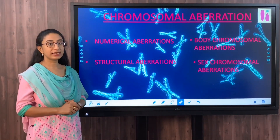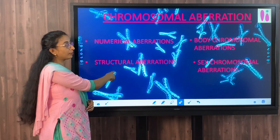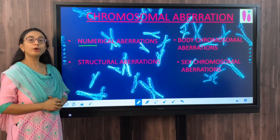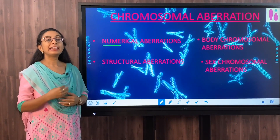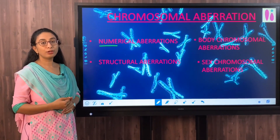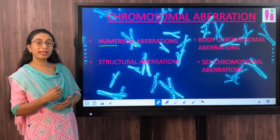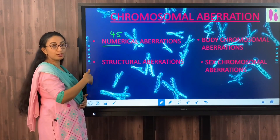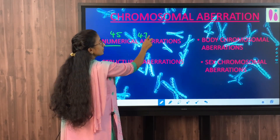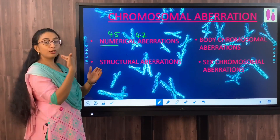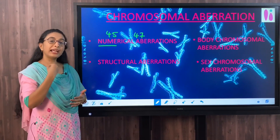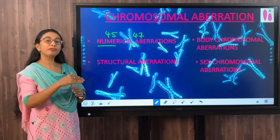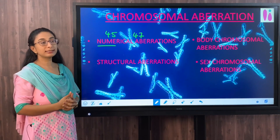Under chromosomal aberration we have various types: numerical aberrations, structural aberrations, body chromosomal aberrations, and sex chromosomal aberrations. A numerical aberration occurs when there is an addition or deletion in the number of chromosomes. Instead of the normal 46, if we have 45 chromosomes due to deletion or 47 chromosomes due to addition, or any variation in number, it is called a numerical aberration.